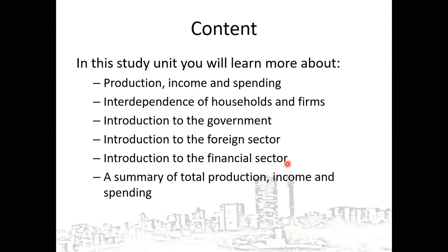All of these — households and firms, the government, the foreign sector, and the financial sector — are included in what is known as the circular flow of income. Within the circular flow of income, we can look at households and firms alone, then add the government, then the foreign sector, and then the financial sector. Lastly, we shall take a look at a summary of what we have covered.